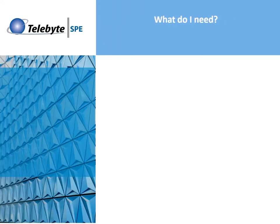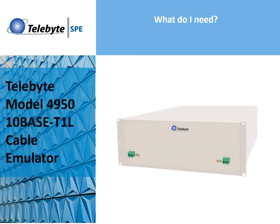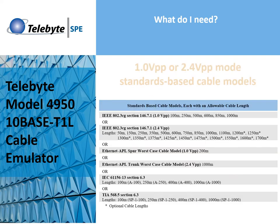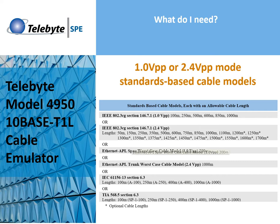What equipment will we need? Let's begin with the Telebyte 4950 10Base T1L Cable Emulator. This product is designed for testing single pair Ethernet and emulates one single twisted pair. Emulation includes modes of 1.0 volts peak to peak or 2.4 volts peak to peak, standards-based cable models in a variety of line lengths as shown here.